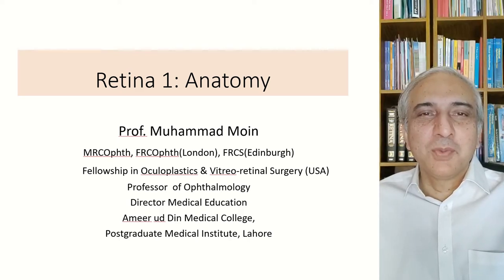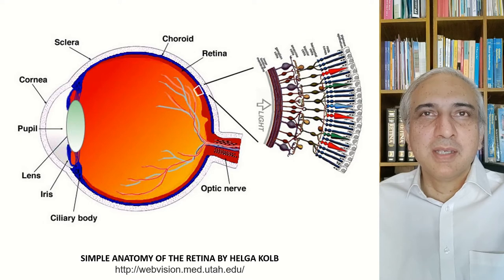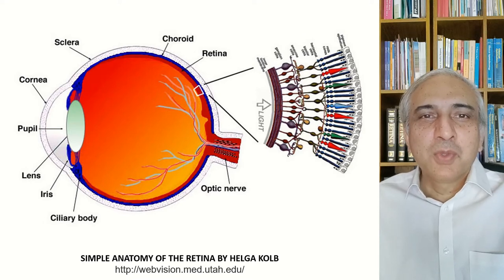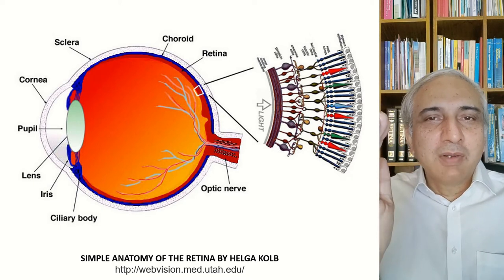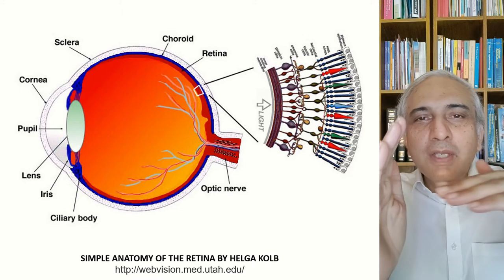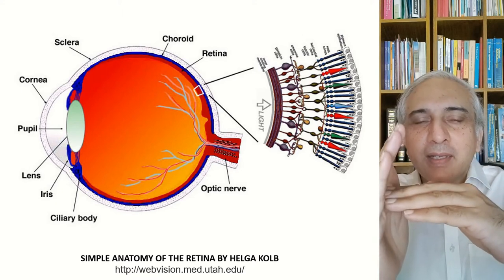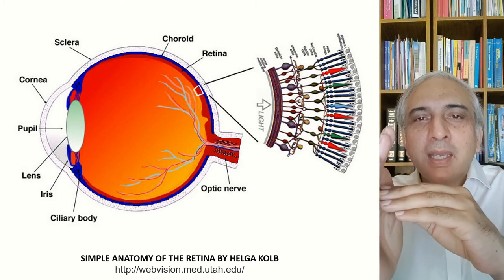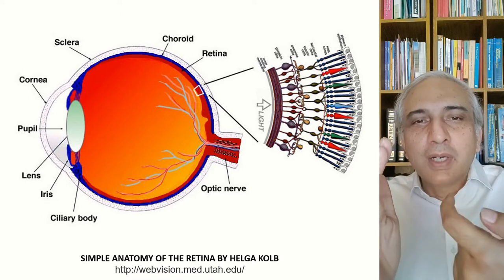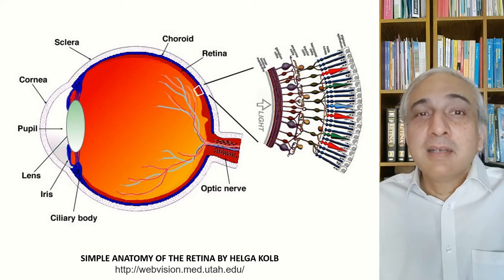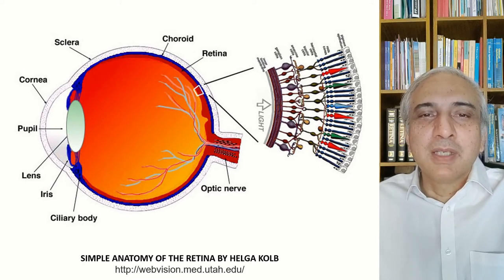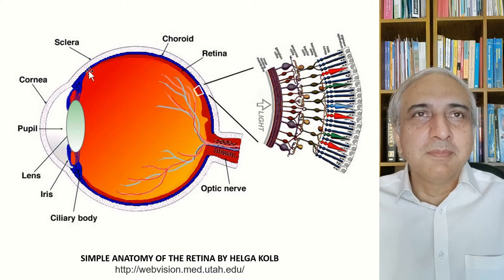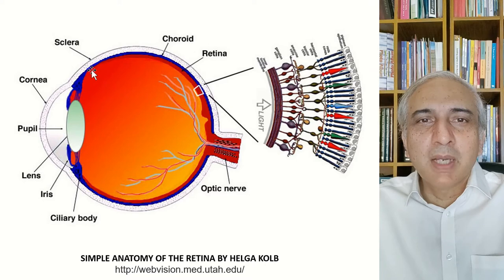Welcome to this module on the retina. We're going to start with the anatomy of the retina. Light comes onto the retina from the front and goes all the way through the transparent layers to the very back where the rods and cones are located. The retina starts from the ora serrata, which is the junction between the ciliary epithelium and the retinal epithelium, and extends all the way to the back.